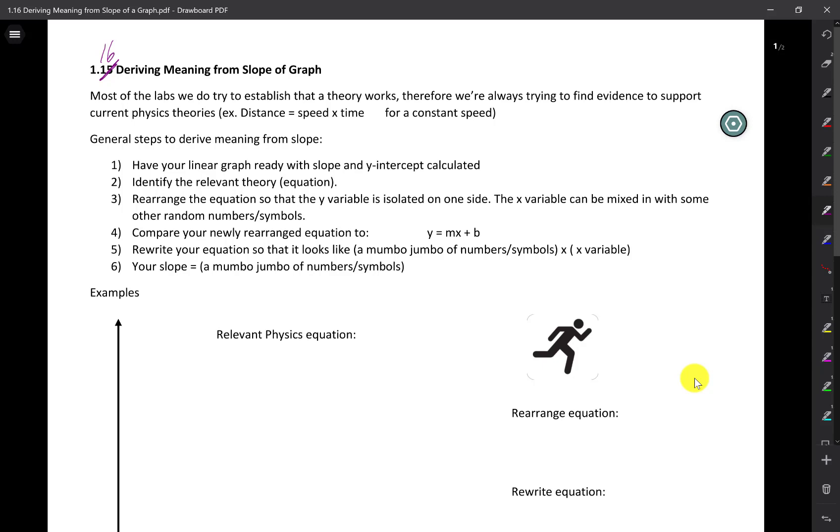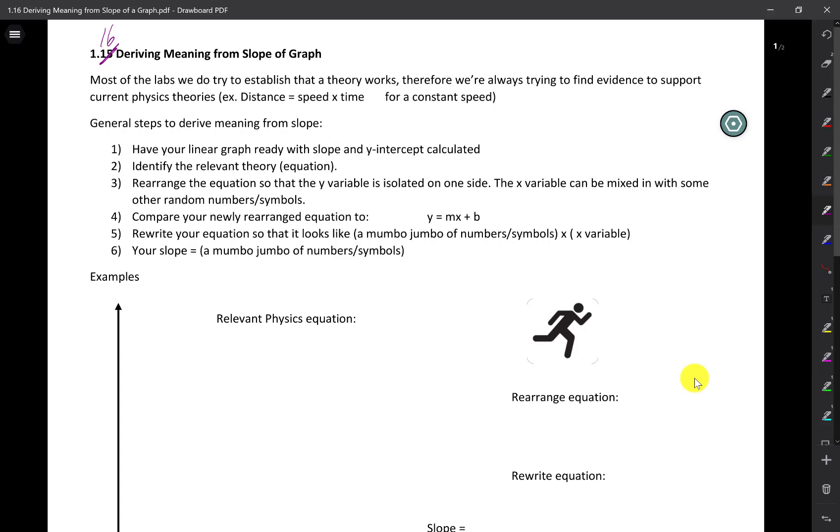Most of the time when we're doing labs in physics, we're trying to establish whether or not a theory works, trying to compare your findings from what we've learned in class. So when you're doing a lab, you're trying to find evidence that supports these theories. A strong evidence from your lab is whether or not your slope matches with a certain constant in a physics equation.